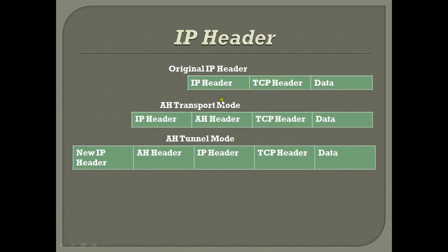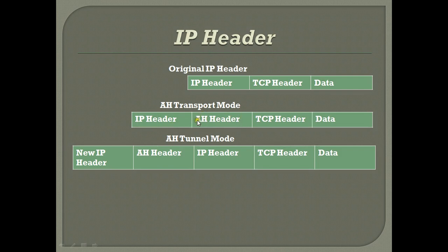To make it clear, look at this diagram. This is our normal original IP header with data and a TCP header. In AH Transport Mode, the data and TCP header remain, the original IP header stays, and an Authentication Header is inserted. In Tunnel Mode, the entire original packet is encapsulated with an Authentication Header and a new IP header is generated, so the original IP header is not revealed to the other end. Transport Mode uses its own IP header while Tunnel Mode generates a new one — that is the key difference.